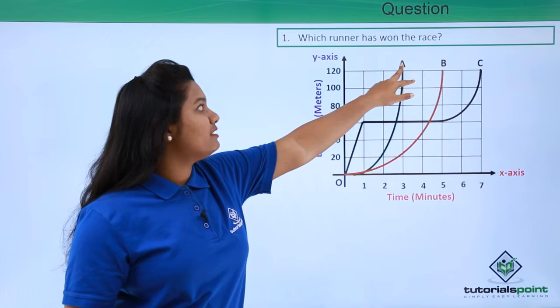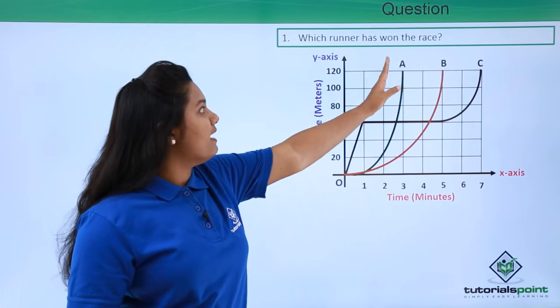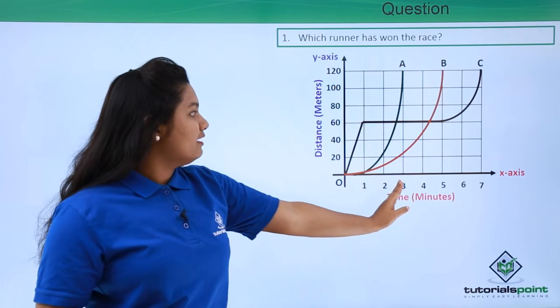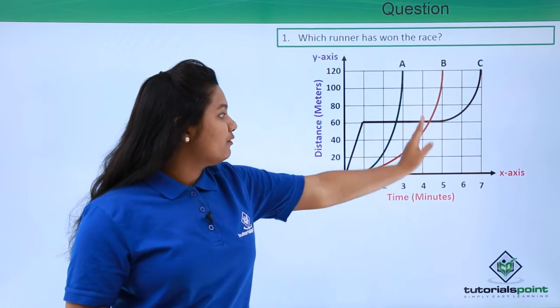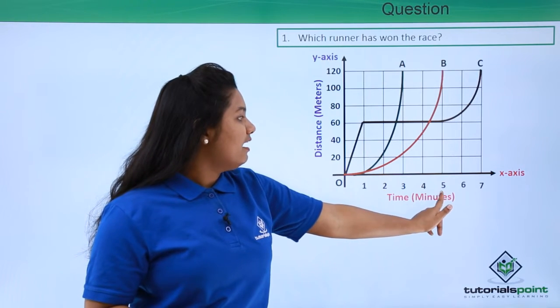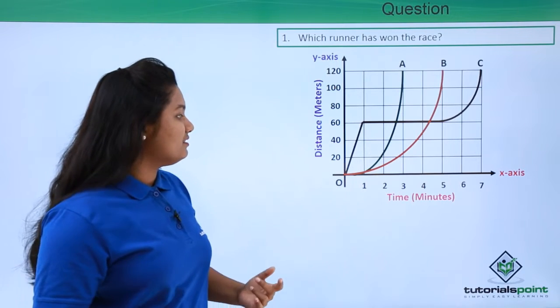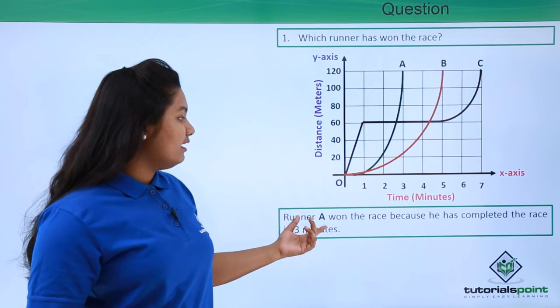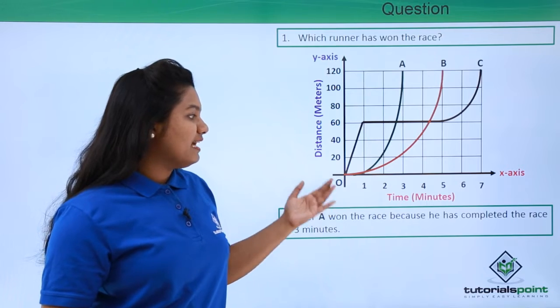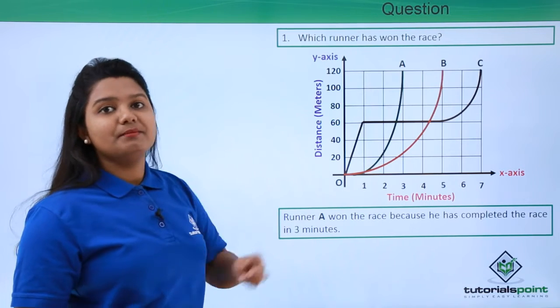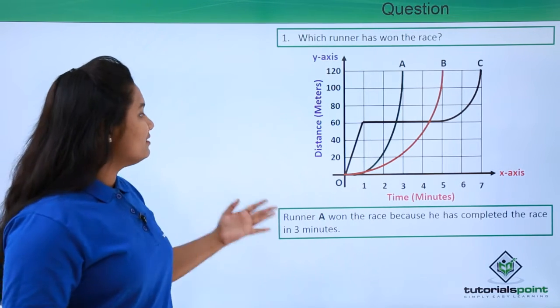So here we see that A is the first one to reach the final point at the end of three minutes. For B it was five minutes, and for C it was seven minutes. So it is the object A which is the winner. The runner A won the race because he has completed the race in three minutes. This is the answer to the question.